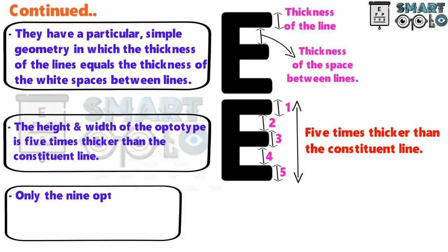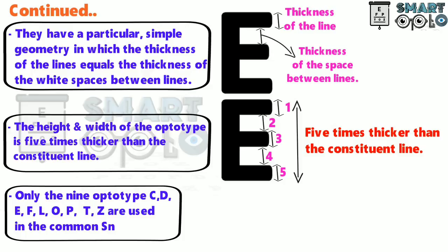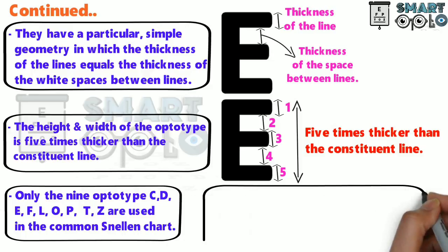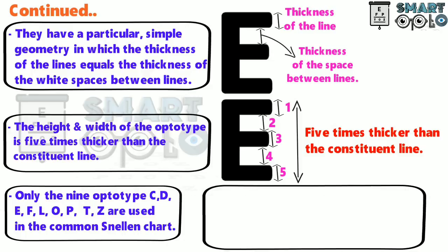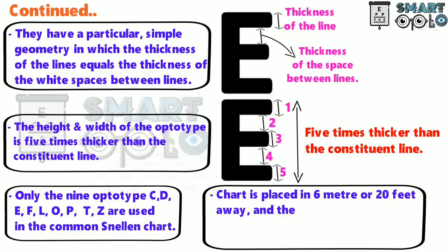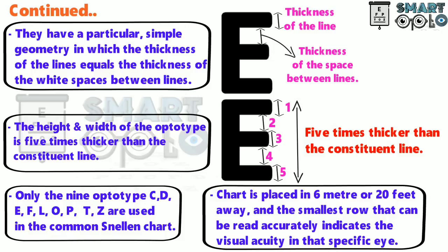Only nine optotypes — C, D, E, F, L, O, P, D, and Z — are used in the common Snellen's chart. The chart is placed six meters or 20 feet away, and the smallest row that can be read accurately indicates the visual acuity in that specific eye.